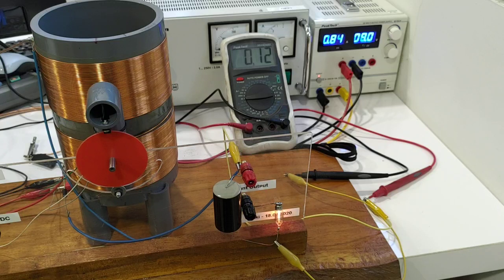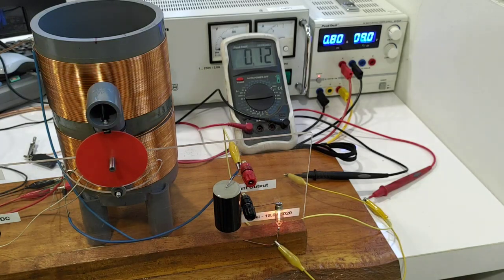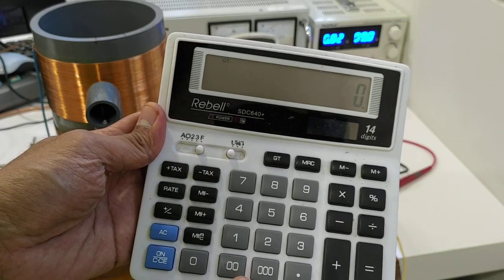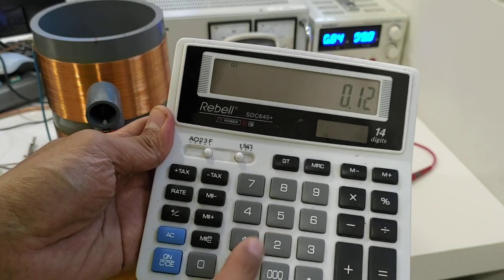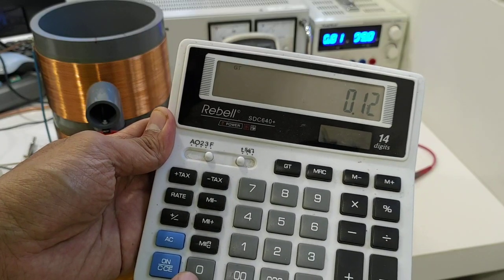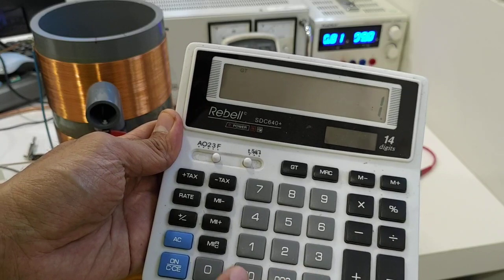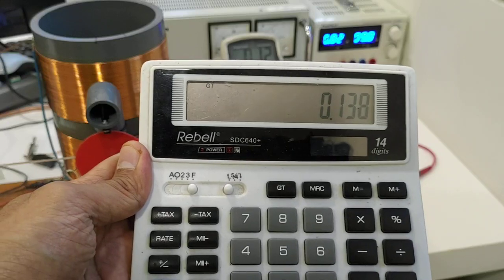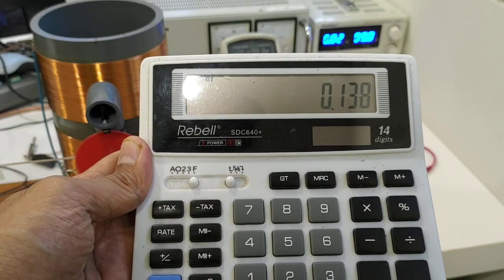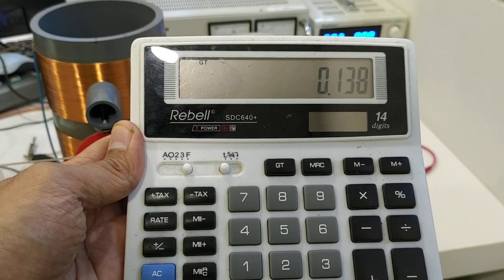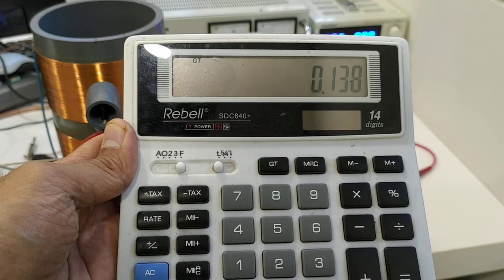Now we have current reading: 0.12 amps. Now we will calculate. 0.12 amps times 1.15 volts gives us the power at the light bulb: 0.138 watts.